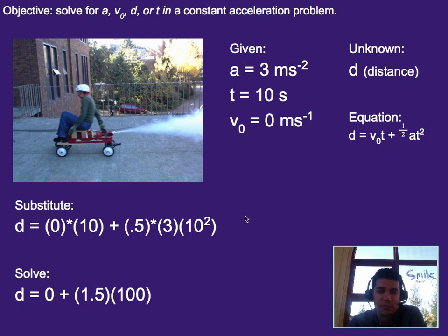If you solve, this comes out to zero plus .5 times three times one-hundred, which gives me zero plus 1.5 times one-hundred, or an answer of 150 meters. So if I'm going to use this rocket wagon that accelerates at three meters per second squared for ten seconds, I'm going to make a track that's 150 meters long. That's over one football field, that's actually like one and two-thirds football fields long.